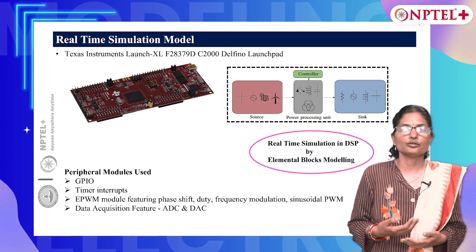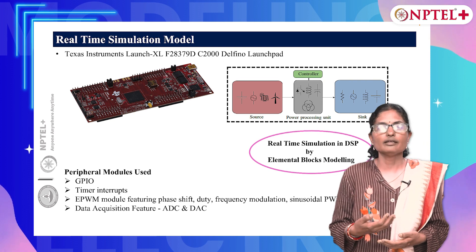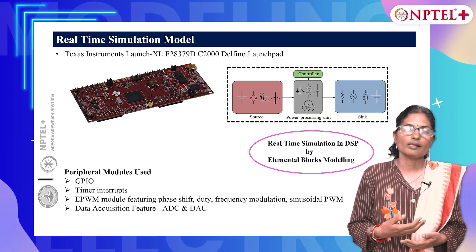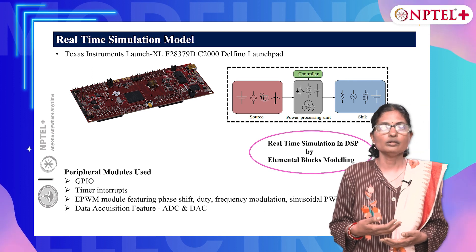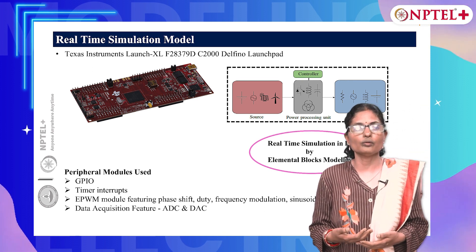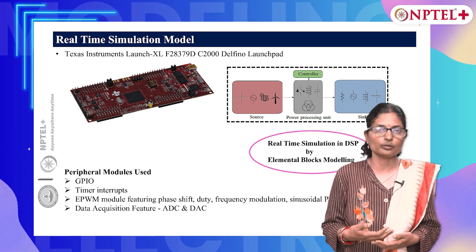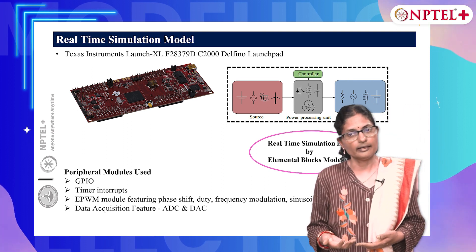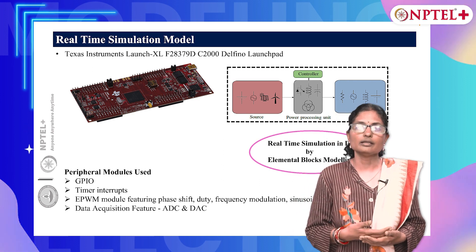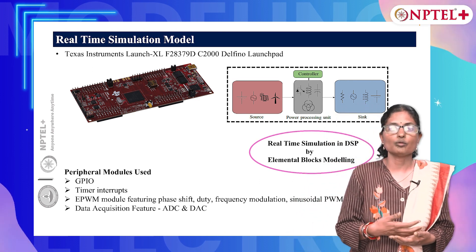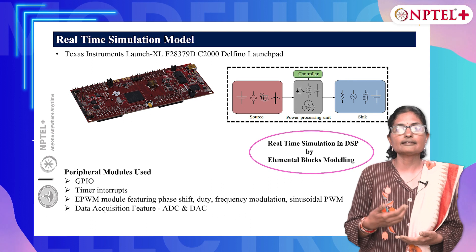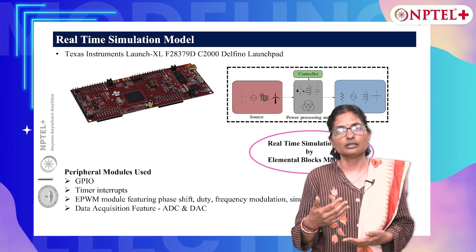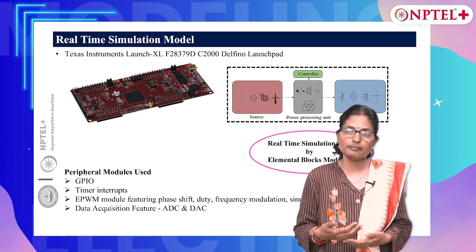The peripheral modules used for programming the F28379D are the general purpose GPIO, the timer module, the enhanced PWM module and the data acquisition modules. The architecture of the DSP and the programming of the peripheral modules and their configurations are covered in the first part of the course, which is digital control for power applications.